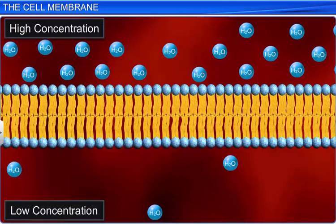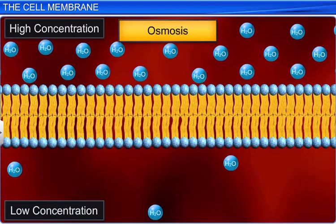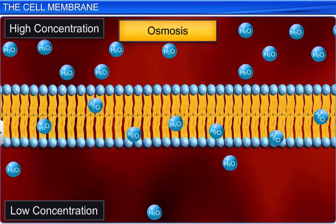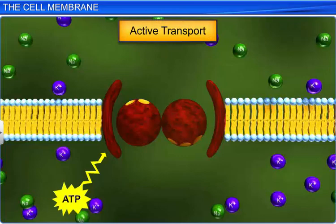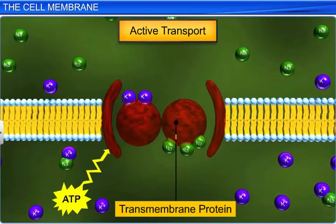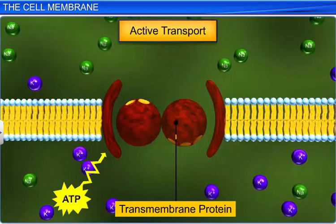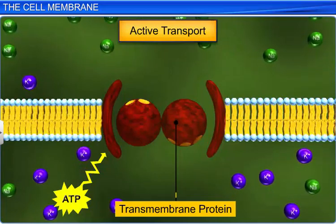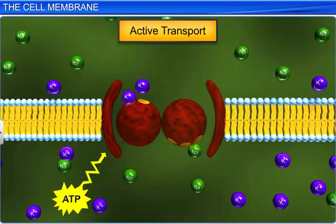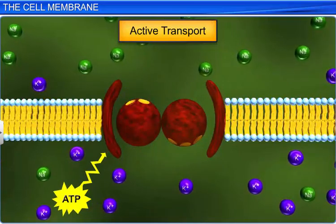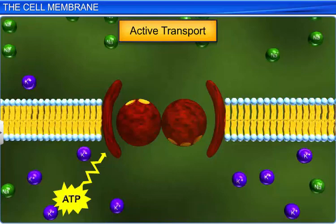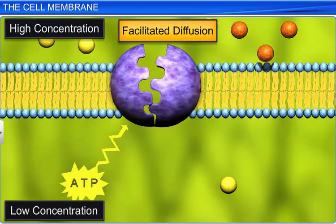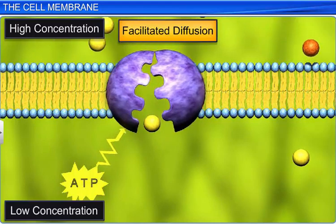On the other hand, osmosis refers to the movement of water molecules across the cell membrane through diffusion. In active transport, transmembrane proteins act as pumps and utilize the energy from ATP to move substances against their concentration gradient, that is, from lower concentration to higher concentration. An example of this is the sodium-potassium pump. Sometimes, glucose is also transported against the concentration gradient via active transport.